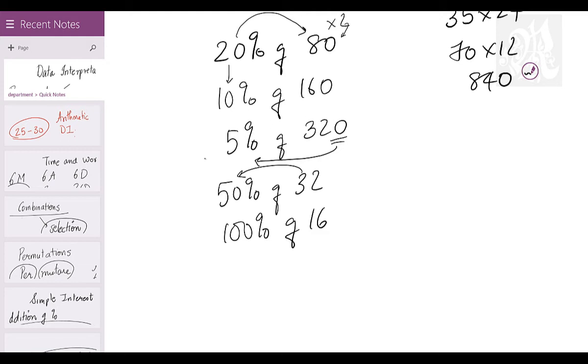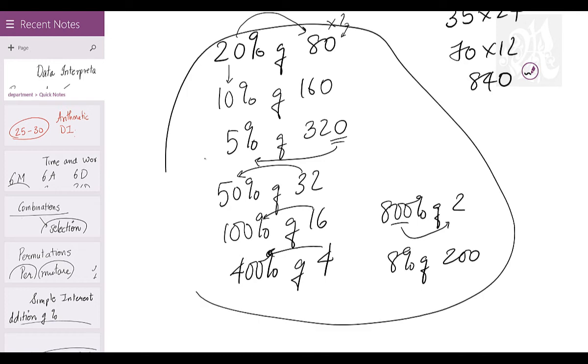100% of 16. I can also take 4 away from here and give it to this guy, so it's going to be 400% of 4. I can take a 2 away and give it here, so it's going to be 800% of 2. I can pull a double 0 out here and give it here, so it's going to be 8% of 200. I can just play around the way I want to and keep getting new terminologies. Each one of these has the same answer, 16. I'll explain the application in a bit.